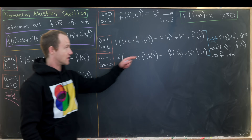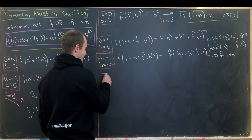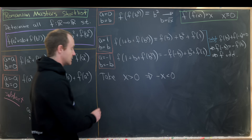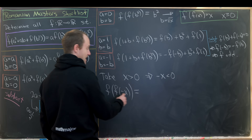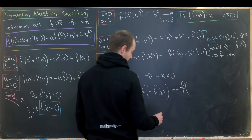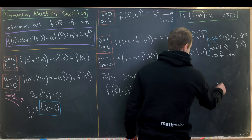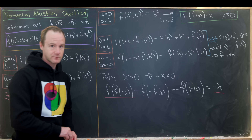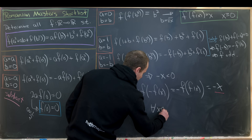Now that f is odd, we can extend f(f(x)) = x to all real x. For x > 0, consider f(f(-x)). Since f is odd, f(-x) = -f(x), so f(f(-x)) = f(-f(x)) = -f(f(x)) = -x. So f(f(-x)) = -x, which means f(f(x)) = x holds for all real x.